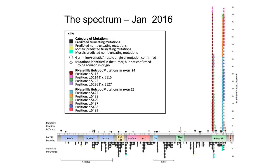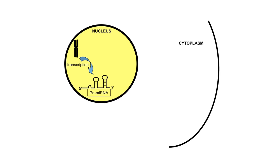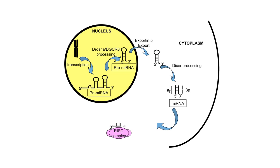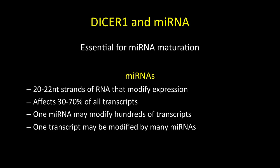Here's the pathway: transcription produces a primary microRNA, which is processed by Drosha into a precursor microRNA, transported by exportin into the cytoplasm. There's the 5 and the 3 and the loop. That loop is then processed by DISA into 5P and 3P microRNAs, taken up by the RNA silencing complex, which then binds to microRNA and silences it. If the match is perfect, it completely silences the mRNA; if imperfect, it down-regulates it. There's also a lot of redundancy — many microRNAs may affect one transcript and vice versa.